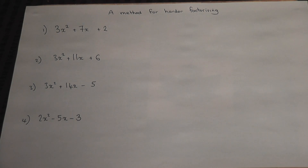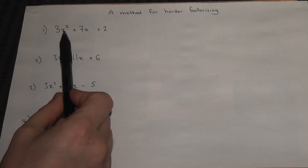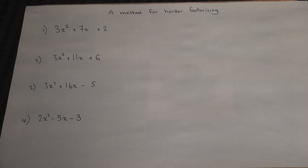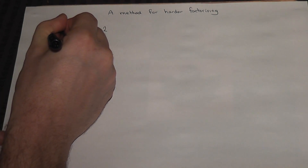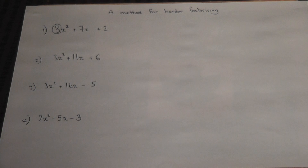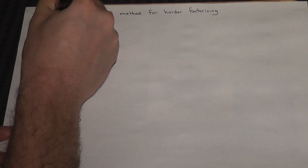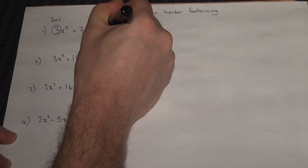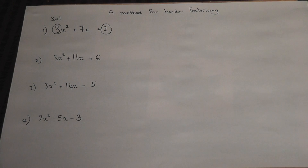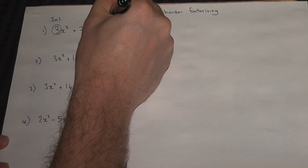This video suggests a way to do the harder factorising when the number before the x squared is not equal to 1. In this method you look at the number before the x squared and look for its factor pairs. The factor pair of 3 is 3 times 1. You then ignore for the moment the 7x and look for the factor pairs of 2, which is just 1 times 2.